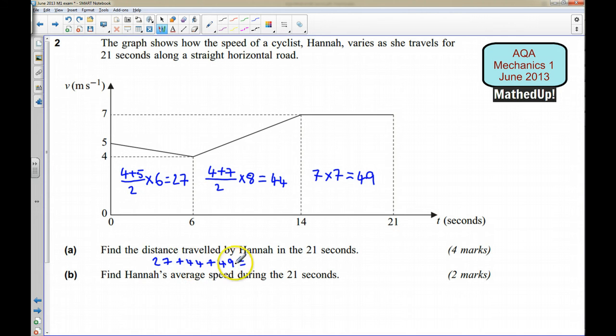Okay for part B it says find Hannah's average speed during the 21 seconds. Well she's travelled 120 meters over 21 seconds so her average speed is going to be equal to 120 divided by 21.